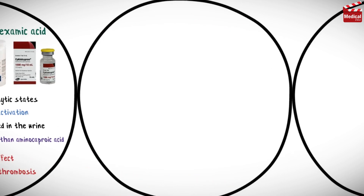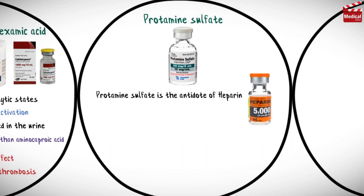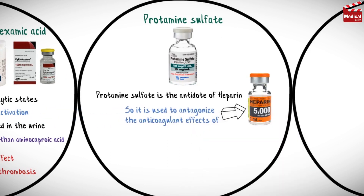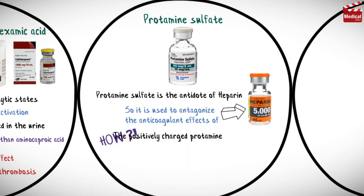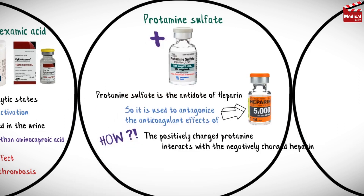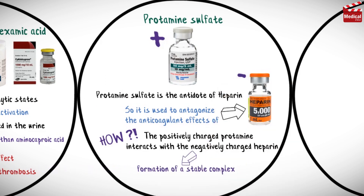The third agent is protamine sulfate, which we already know from the previous lectures is the antidote of heparin. It is used to antagonize the anticoagulant effects of heparin. The positively charged protamine interacts with the negatively charged heparin, leading to the formation of a stable complex without anticoagulant activity.